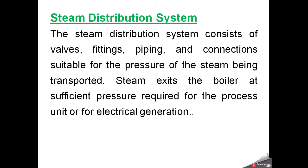The steam distribution system consists of valves, fittings, piping, and connections — all suitable for the pressure of the steam being transported. Steam exits the boiler at sufficient pressure required for the process unit or for electrical generation. The steam produced in this boiler may be used for chemical processes, other industrial processes, or for electrical generation by driving a turbine.